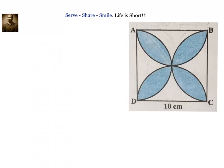Hello friends, welcome back. Hearty welcome to you. In this session, let's try to find out the area of the shaded region of the given figure. We have been given ABCD, a square of sides 10 centimeters. We have to find out the shaded area. Now, what is our approach to solve this problem?